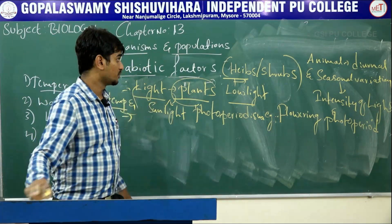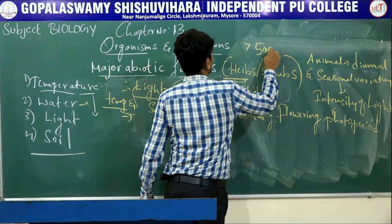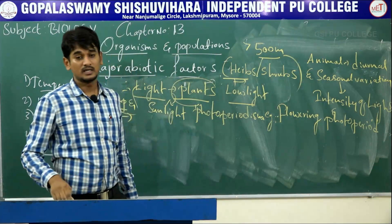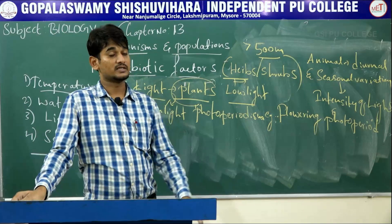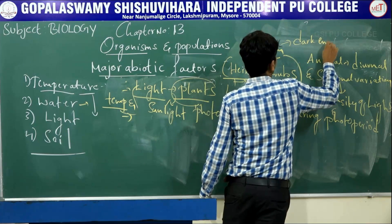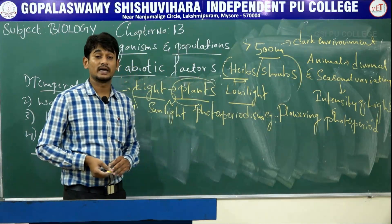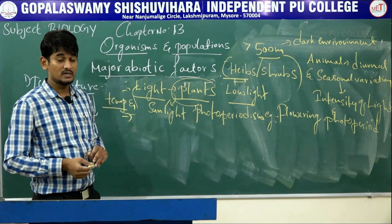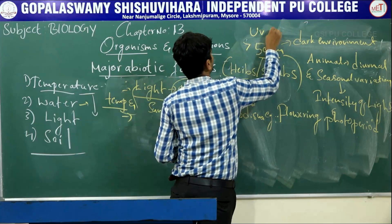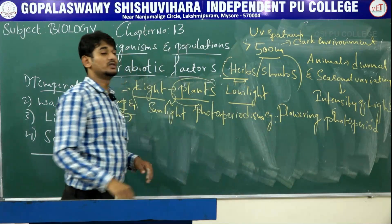In the deep sea, at depths of up to 500 meters in the ocean, there is no light — only a dark environment. Some spectral qualities of solar radiation are very important for life, while others are harmful. The UV spectrum, for instance, is harmful to organisms.